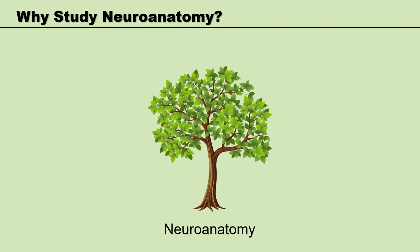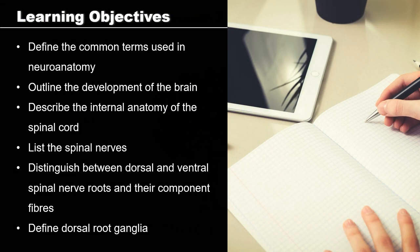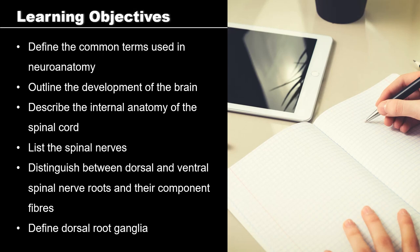Neuroanatomy spans disciplines such as neuroscience, psychiatry, psychology, medicine and dentistry — and this is by no means an exhaustive list. So let's have a look at the learning objectives for this video. After watching this and after any further self-directed study, you should be able to define the common terms used in neuroanatomy, outline the development of the brain, describe the internal anatomy of the spinal cord, list the spinal nerves, and distinguish between dorsal and ventral spinal nerve roots and their component fibres. You should also be able to define the dorsal root ganglia.